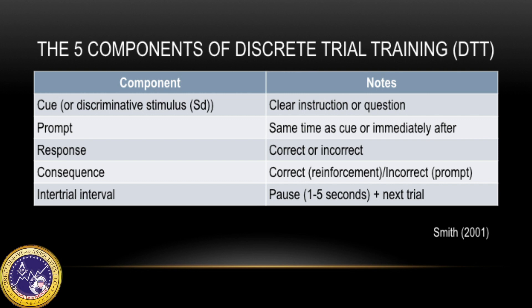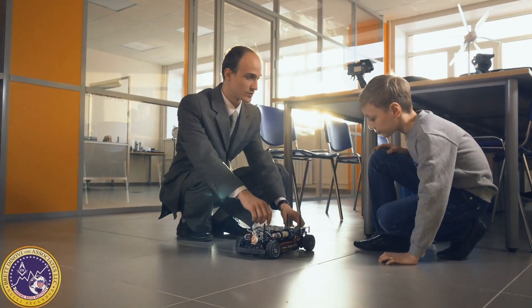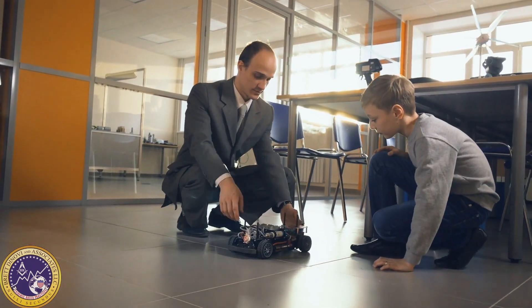The five main components are: cue — also known as discriminative stimulus, or SD — prompt, response, consequence, and inter-trial interval. It should be noted that these are just the components and the order of the trial depends on the response of the learner, but each trial starts with a cue and always ends with the inter-trial interval. The cue is a clear, brief instruction that evokes a specific response — for example, 'do this' or 'what is this.'